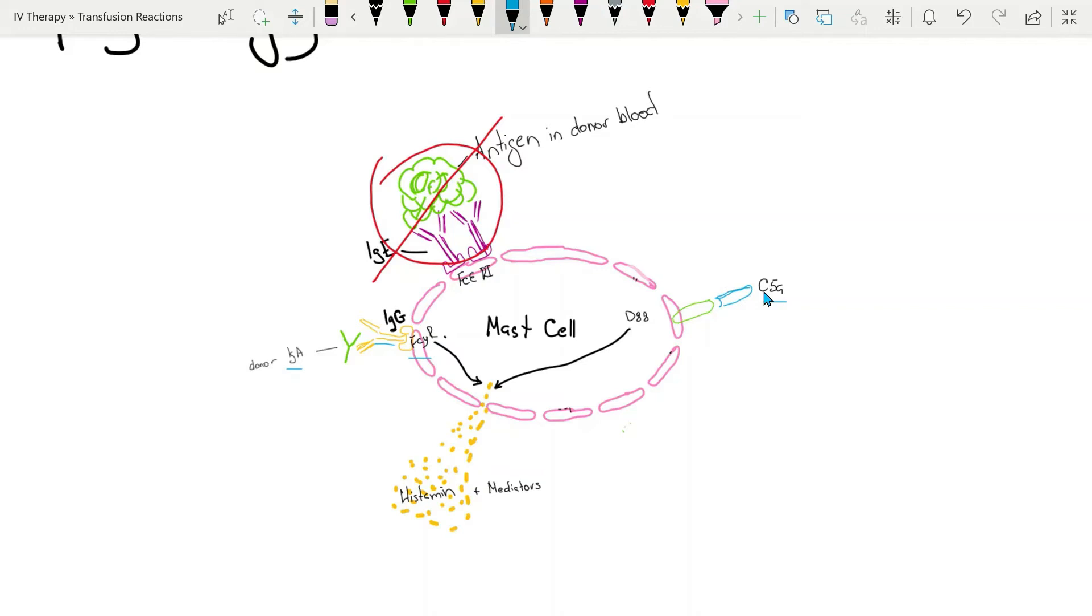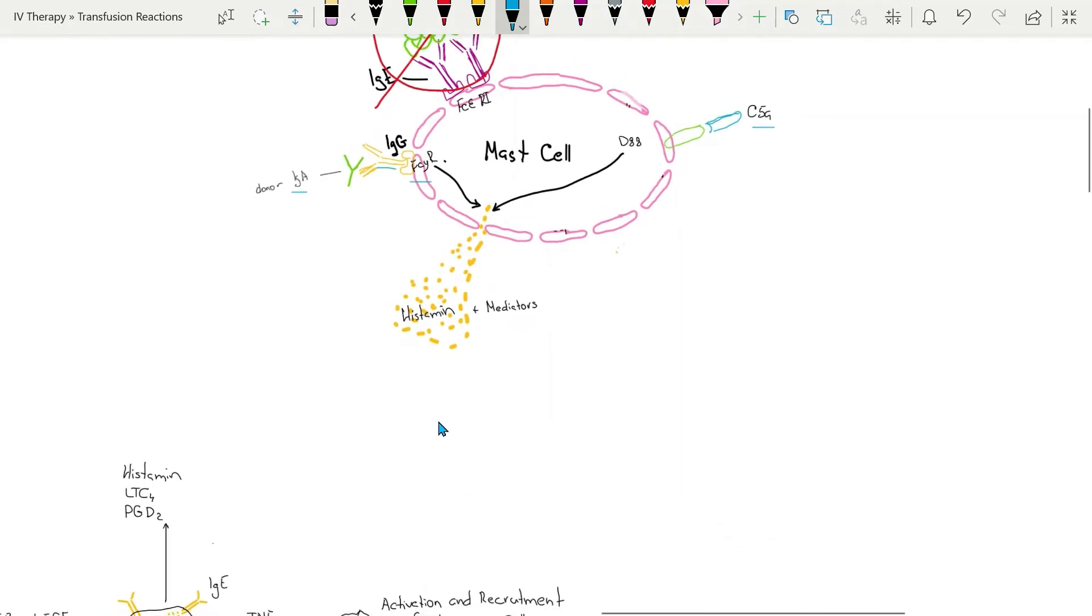Mast cells can also be activated if donor immunoglobulin A binds to immunoglobulin G that binds to the receptor in the mast cell, which leads to degranulation and release of histamine and cytokines which lead to signs and symptoms.